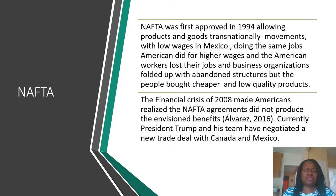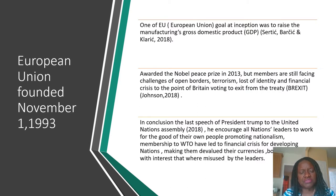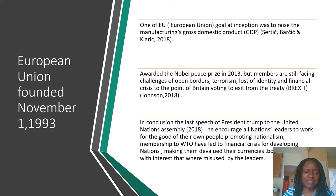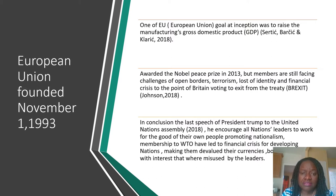Currently, President Trump and his team have negotiated a new deal with Canada and Mexico. The European Union was founded in 1993 in the Netherlands. At its inception, one of the goals was to raise the manufacturing gross domestic product of its member nations, and it was even awarded the Nobel Peace Prize in 2013. But members are still facing challenges of open borders, terrorism, loss of identity, and financial crisis — to the point of Britain voting to exit the treaty. The British pound has more value than the euro, and they were doing well by themselves before. Greece has also faced a serious financial crisis.